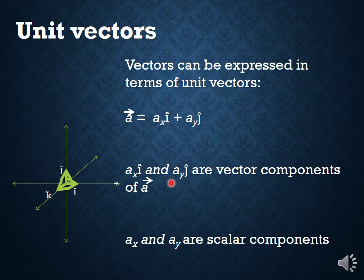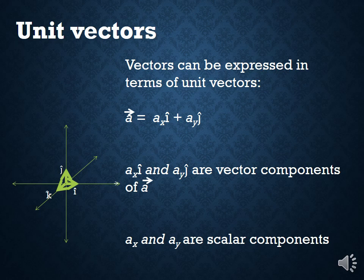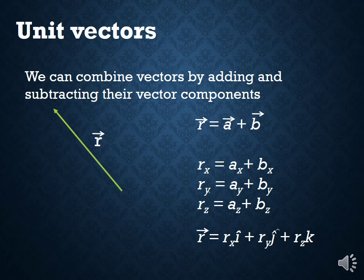I can now write vectors as: vector A equals A-sub-x i-hat plus A-sub-y j-hat. We say that A-sub-x i-hat and A-sub-y j-hat are the vector components of A. We can add and subtract these vector components with other vector components — anything involving i-hat can be added to any other term involving i-hat, anything involving j-hat can be added to any other j-hat term. You can always add your i's, j's, and k's in a column.